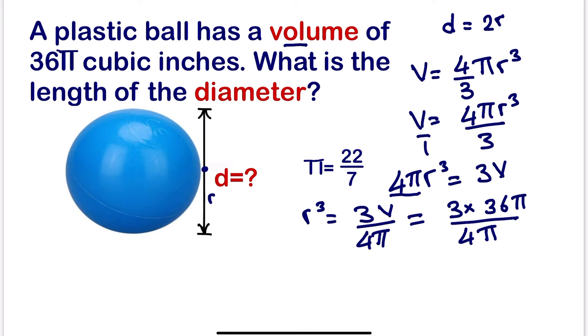We can see that π and π, we can simplify. So π will divide π, we'll be left with this. We can also divide 4 into 36. 4 divided by 36 is 9.